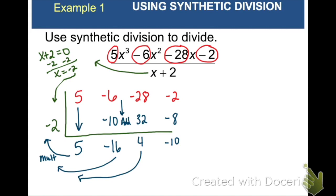So again, you're just adding down, multiplying by negative 2. Adding down, multiplying by negative 2, over and over.